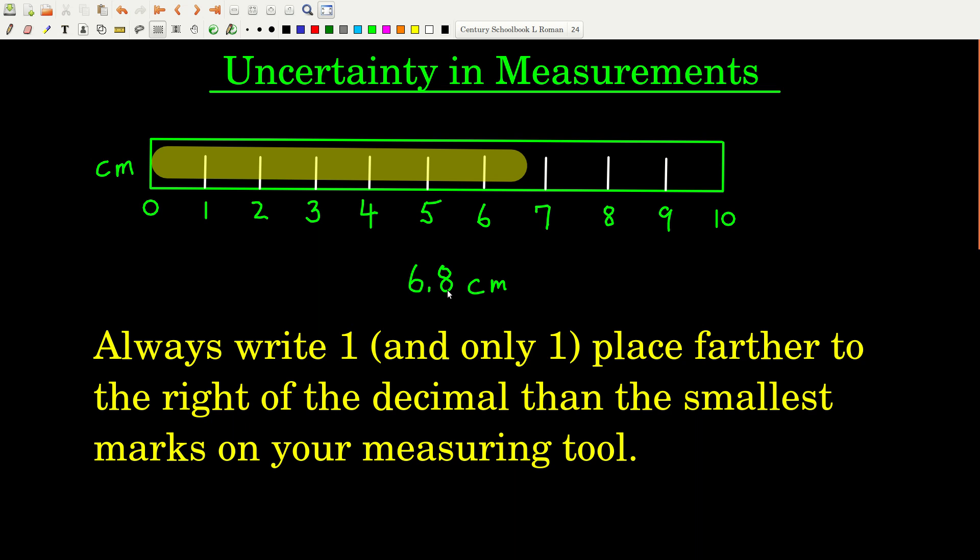So if I looked at this number, the last significant figure is in the tenth of a centimeter, the tenths place. So I know that the marks, the closest marks together on that ruler had to be in the ones place, one centimeter apart, just like they are here. So this goes two ways. When you look at a number that came from a measurement, you can tell how far apart the closest marks were to each other on that instrument.